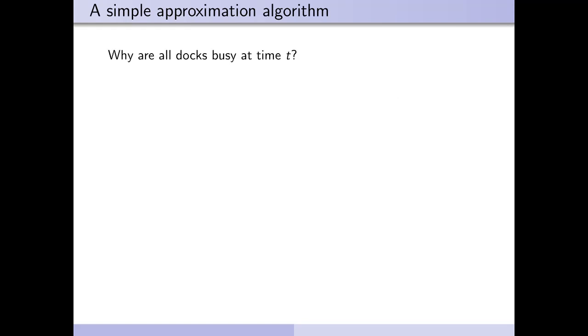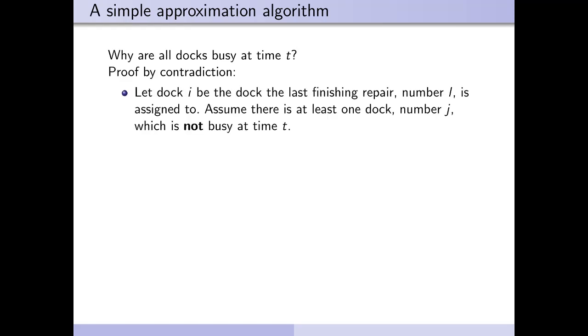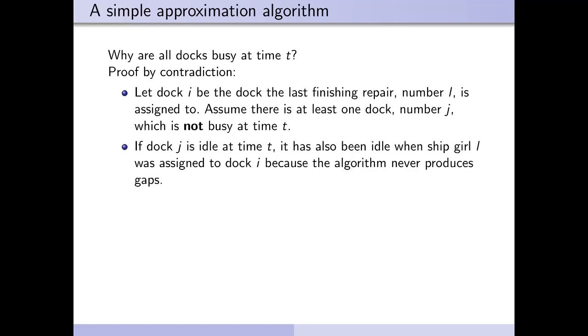So why are all docks busy at time t? We are going to prove this by leading the opposite assumption to a contradiction. Ok, so let dock number i be the dock the last finishing repair, number l, is assigned to. Now we assume that there is at least one dock number j which is not busy at time t. Now if dock j is idle at time t, it has also been idle when shipgirl l was assigned to dock i, as the algorithm does not produce gaps, as it sticks the repairs right on top of each other.